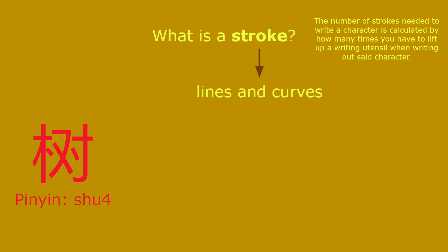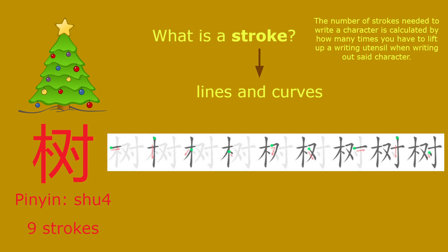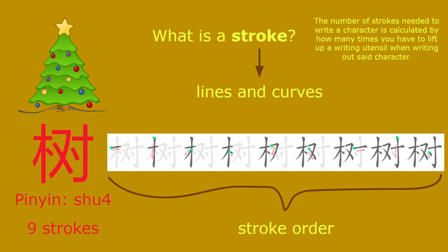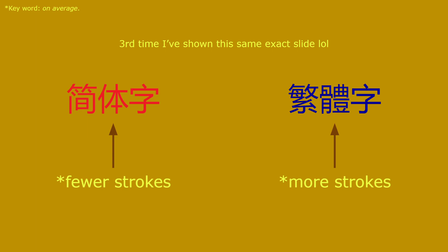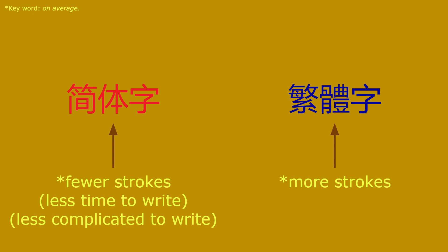Take this character for example — 'shu,' which means tree. This character has 9 strokes. There is also a specific order in which you must write out the strokes, but who actually follows stroke order? Since simplified characters on average have fewer strokes than traditional characters, they take up less time to write and are also less complicated. This certainly lends simplified Chinese an advantage regarding efficiency.